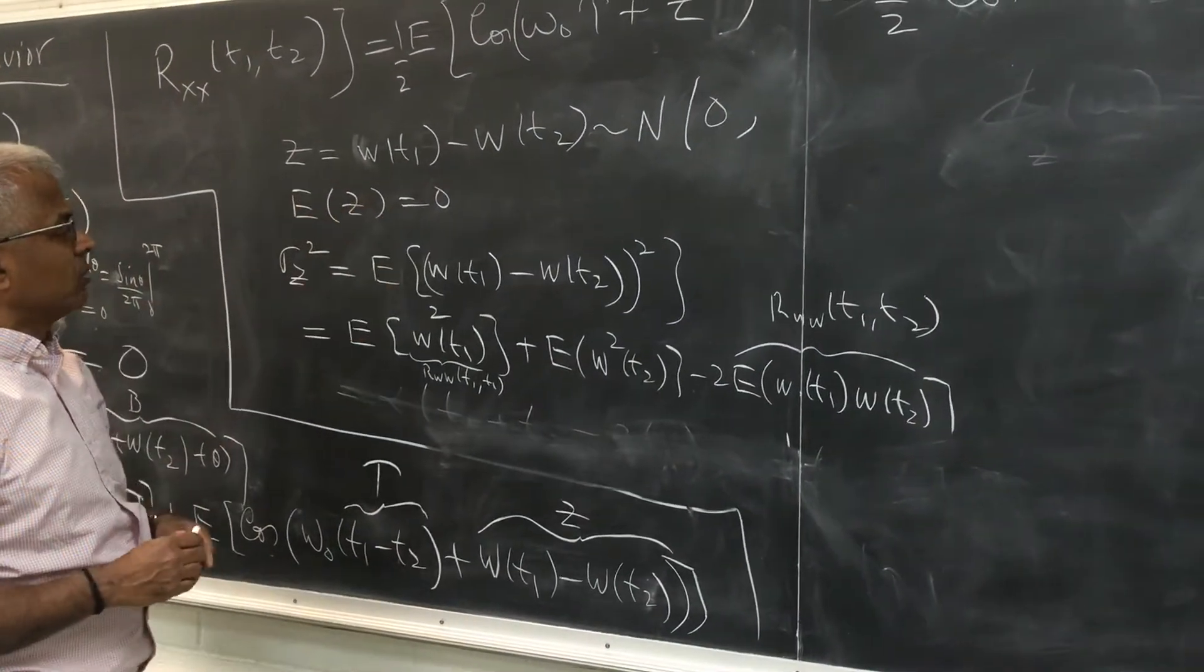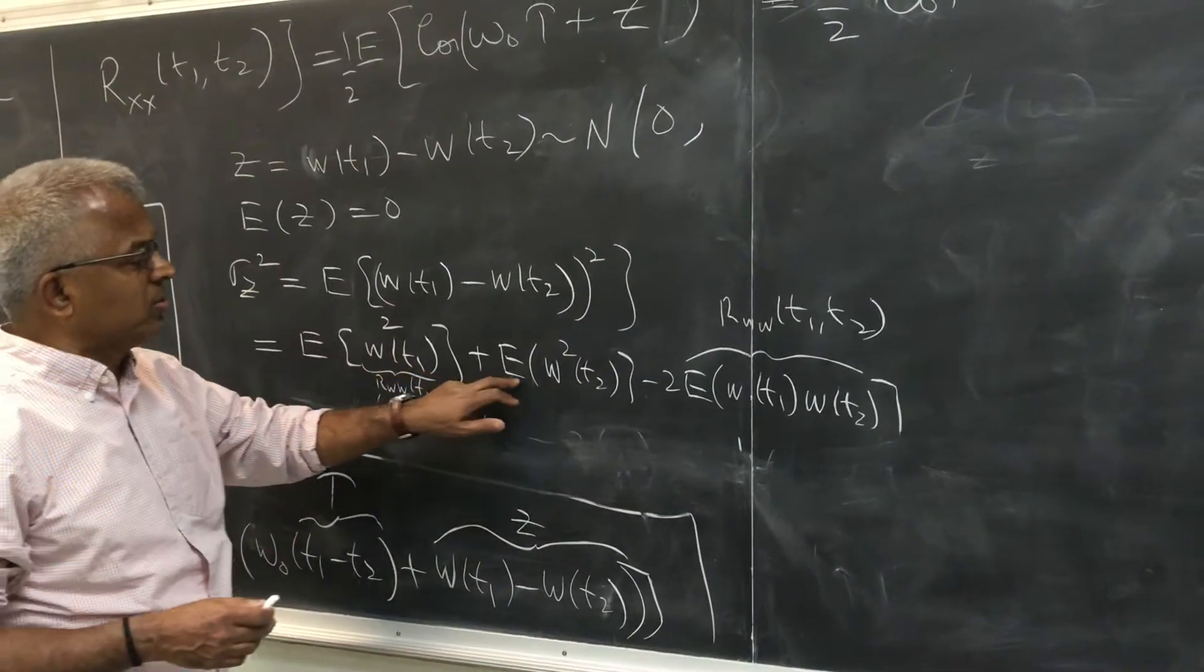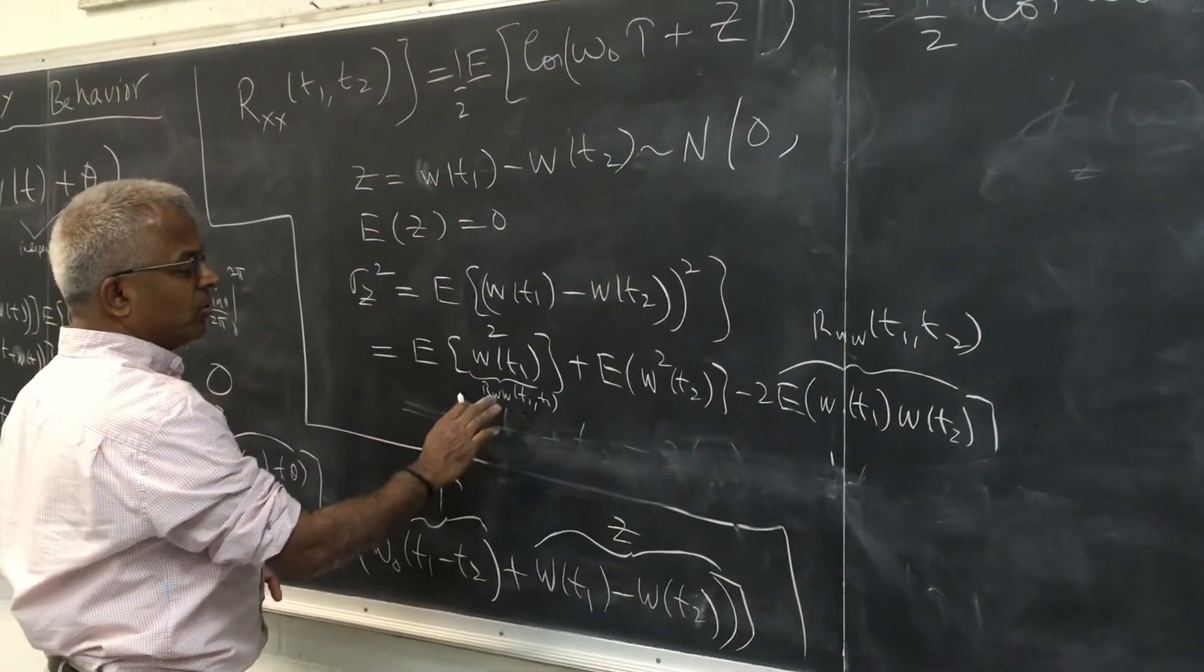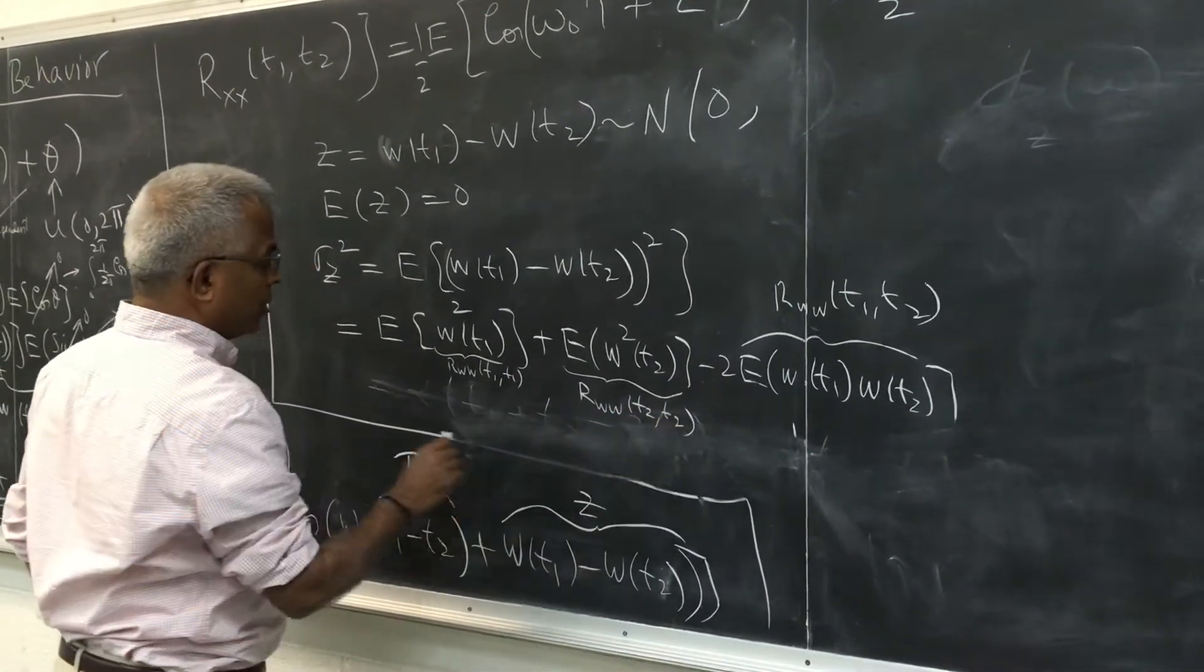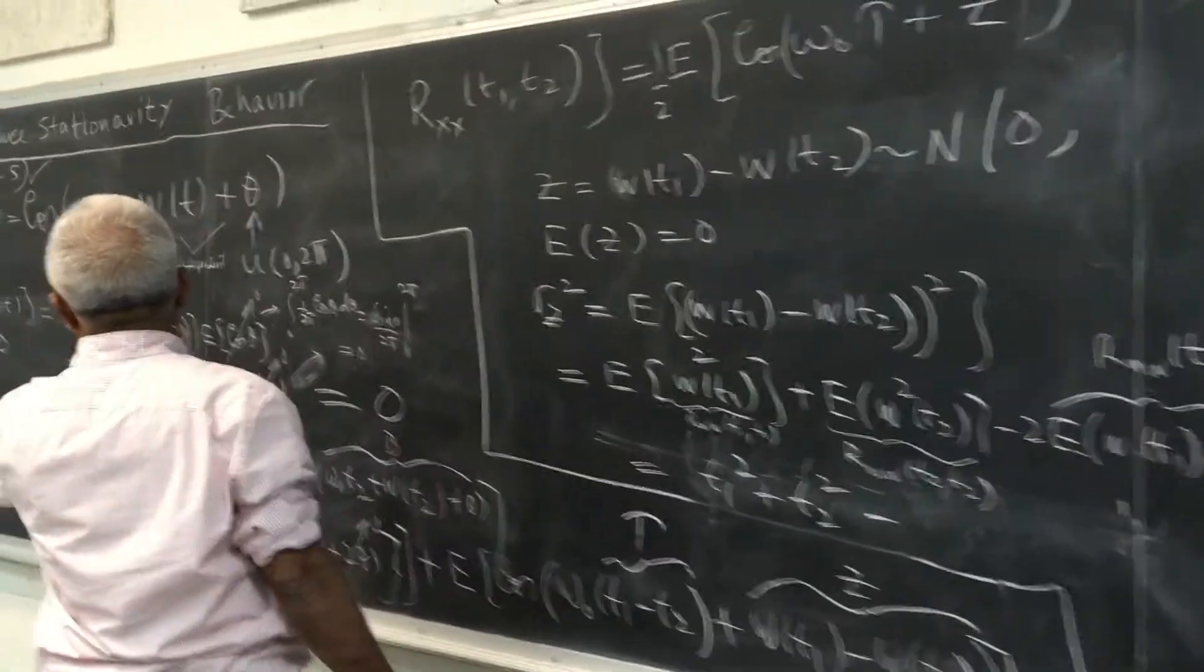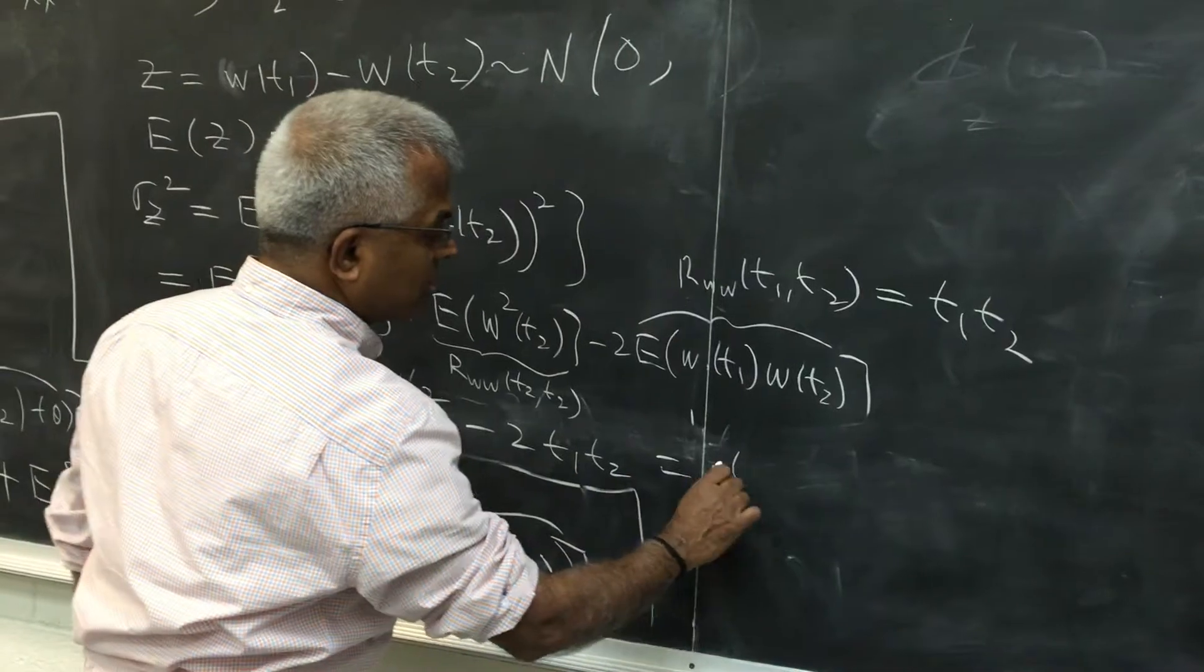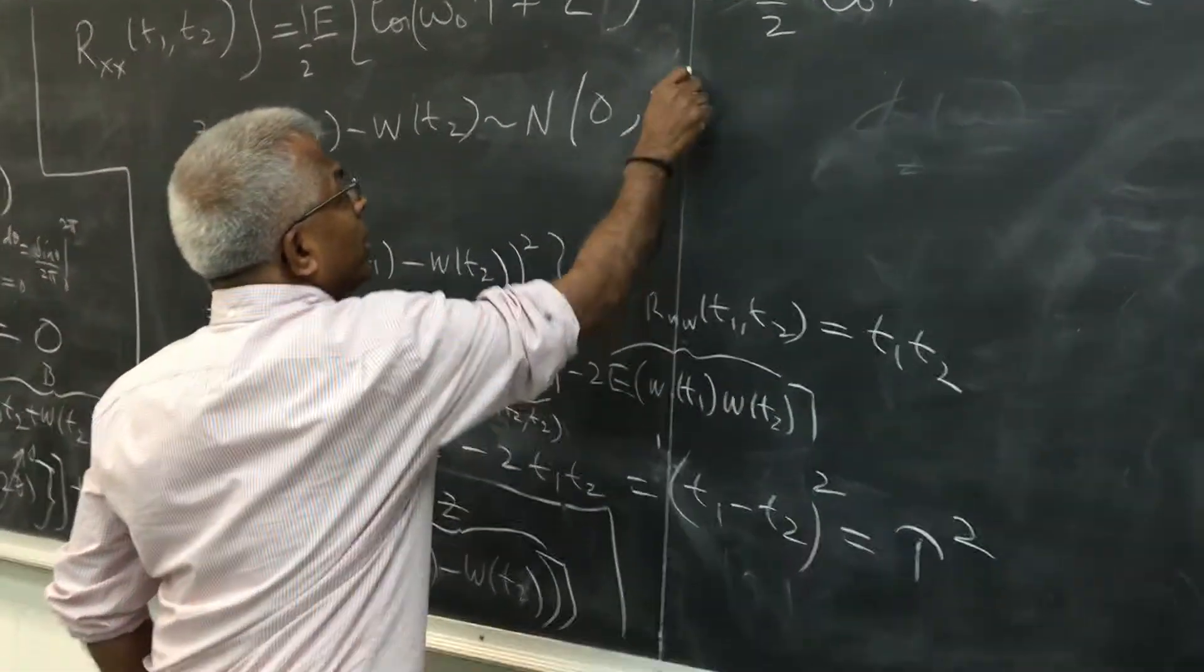And its variance is, you square it. So you have expected value of w squared t1 plus expected value of w squared t2 minus 2 expected value of w(t1)w(t2). But this is the autocorrelation function at t1,t2. This is simply the autocorrelation function at t1,t1. This is the autocorrelation function of the input process at t2,t2. But this is given to be t1 squared, this is t2 squared. Because rww(t1,t2) is t1 t2. So this is t1 t2, minus 2 t1 t2. So this is (t1-t2) the whole squared. But t1 minus t2 we decided to call tau squared. So this variance is tau squared.